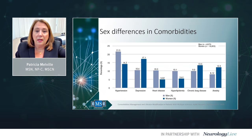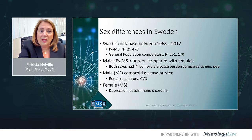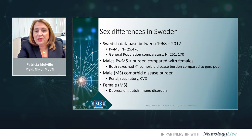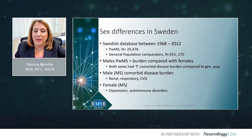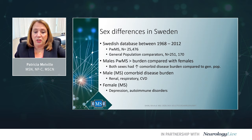There are sex differences in comorbidities. Males show higher rates of hypertension, heart disease, and hyperlipidemia, while females show more problems with depression, anxiety, and lung disease. A Swedish database study over 44 years (1968–2012) of 25,000 MS patients versus 250,000 general population controls found that males with MS had a higher comorbidity burden compared to females. Both sexes had a higher comorbidity disease burden compared to the general population. In males, the comorbid burden was primarily renal, respiratory, and cardiovascular disease; in females, it was depression and autoimmune disorders.